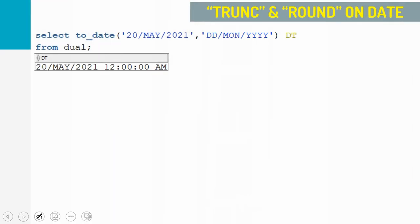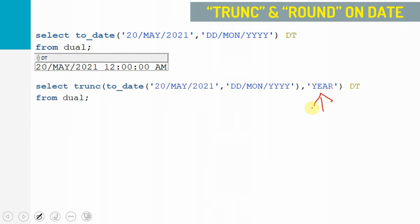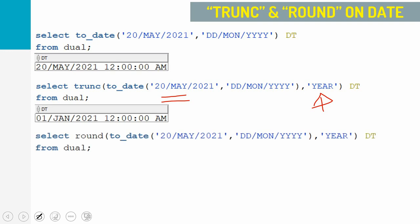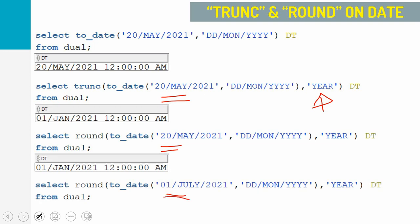Very similarly, instead of 'MONTH', we can pass 'YEAR' as the second parameter. When we pass 'YEAR', TRUNC always returns the first day of that year — so the output is 1st Jan 2021. ROUND will round based on which half of the year the date falls in. If the input date is in the first half of the year, ROUND returns the first day of that year. If the date is in the second half, ROUND returns the first day of next year. Since 20th May is in the first half, the output is 1st Jan 2021. If we use 1st July 2021 as input, which falls in the second half, the output would be 1st Jan 2022.